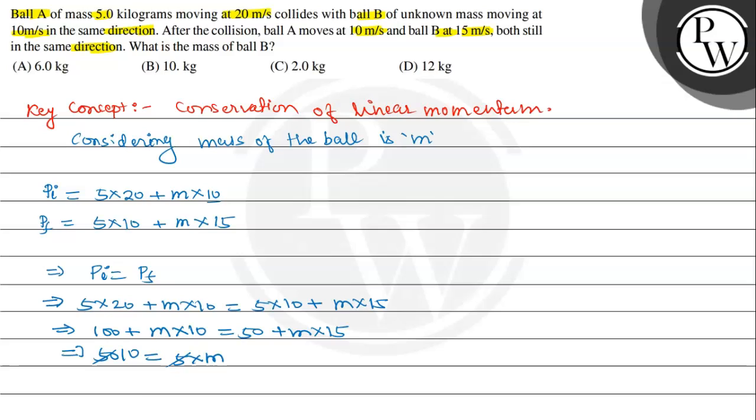Toh yeh 5, 10, ja kitna ho jayega - 10. So m ki jo value aayegi, m will be nothing but 10 kg, thik hai? Toh correct option jo hoga, that will be 10 kg, thik? Toh yahan se agar hum log option ko search karain, toh correct option jo hoga, that will be option B, that is 10 kg. I hope you understood well.